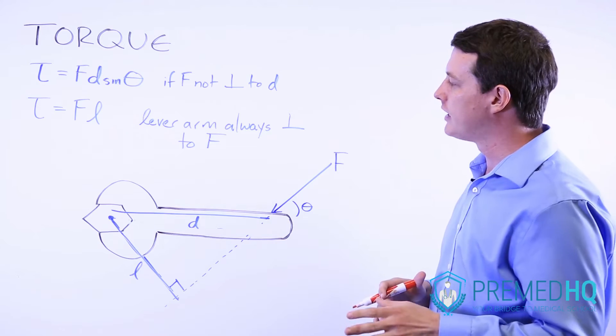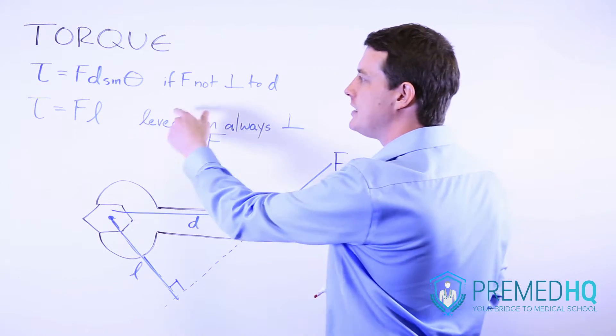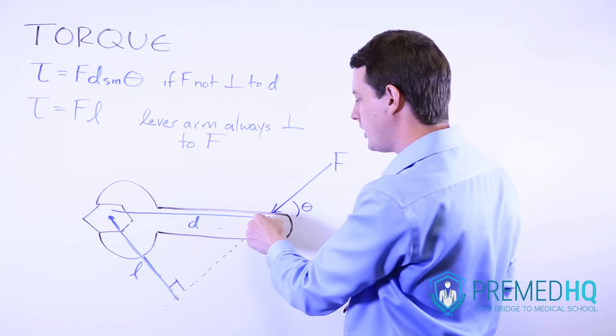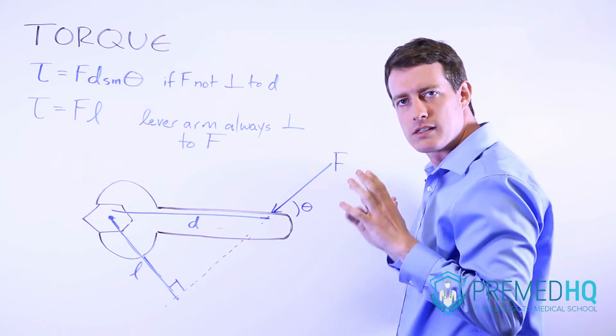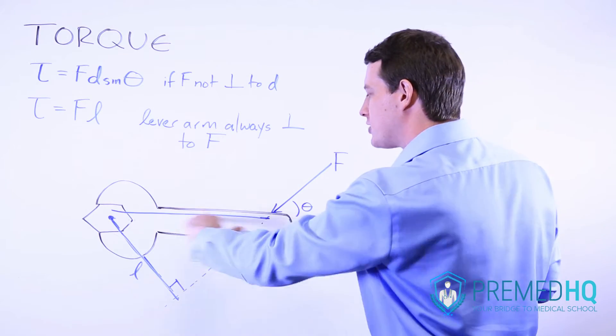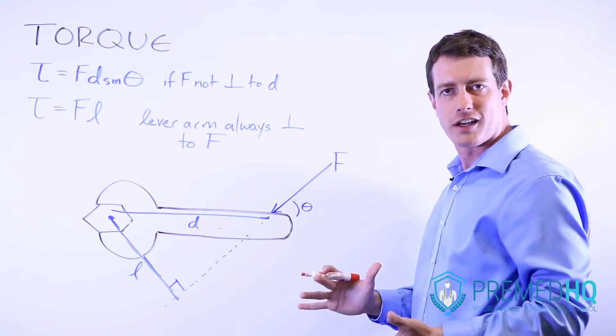The first thing to realize is that you use this Fd sin θ if the distance between the point of rotation and the point where the force is applied, if that vector there is not perpendicular to the force vector.